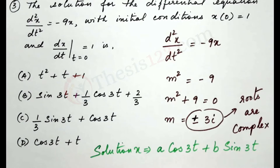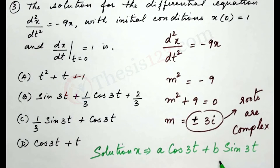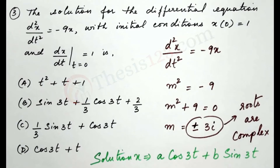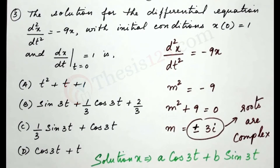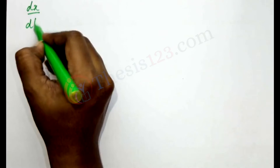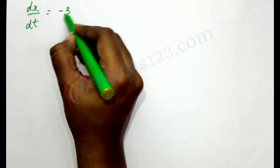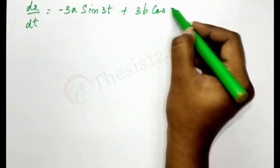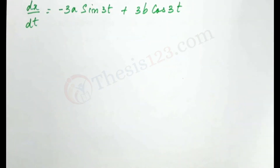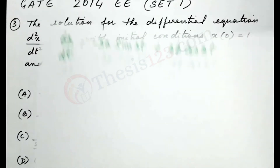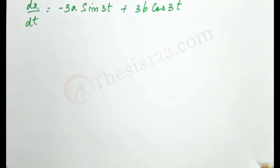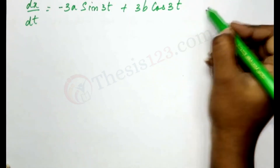We need to find the values of a and b. Since our solution is in the form of a trigonometric function, let's find the first derivative of x. So dx/dt = -3a·sin(3t) + 3b·cos(3t). We'll call the original solution equation 1 and this first derivative equation 2.